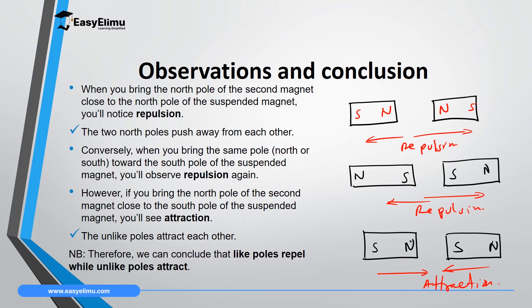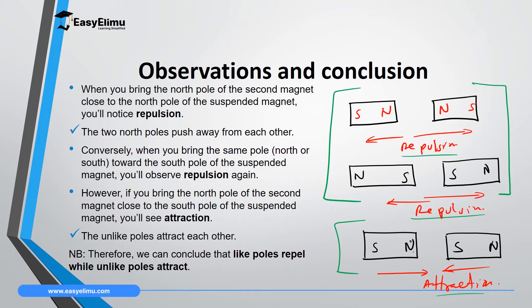From these observations, you can summarize using the basic law of magnetism: in the first set, we have like poles close to each other and they repel. In the third set, where we have north pole and south pole close to each other, there is attraction. Therefore: like poles of a magnet repel, while unlike poles of a magnet attract — that is the basic law of magnetism.